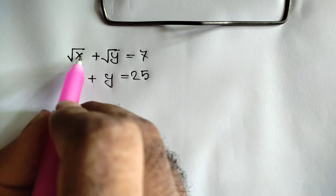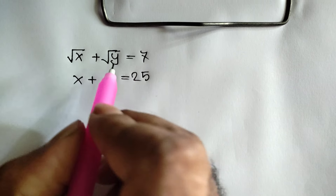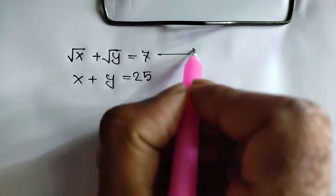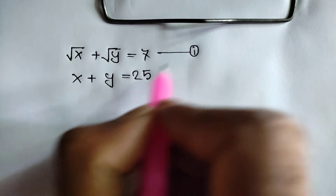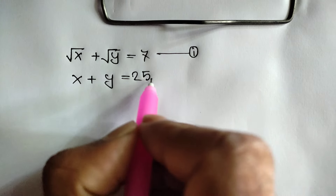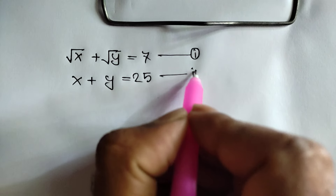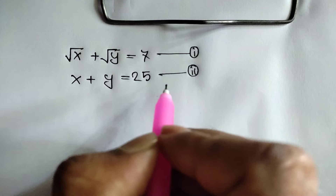Square root of x plus square root of y is equal to 7 — this is called equation number 1. And x plus y is equal to 25 — this is called equation number 2.